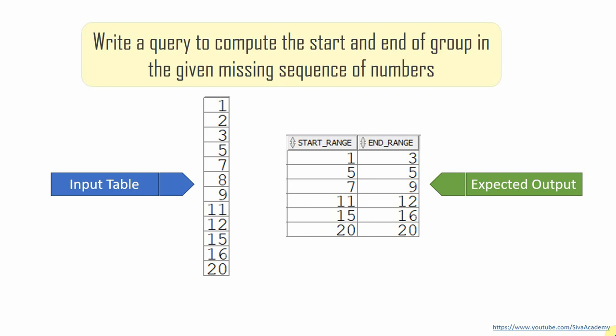For example, so here is a sequence like 1, 2, 3 and there is a break. So 1, 2, 3 forms a group. Then 5. After that it's not continuous. Then 7, 8, 9 is continuous. After that 11 and 12 is a continuous set followed by 15, 16, and finally 20.